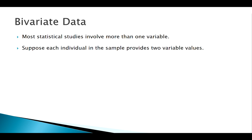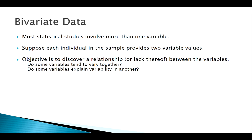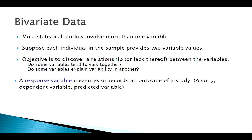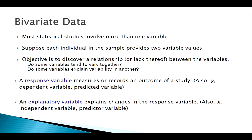We have measurements of a single individual from two different variables, and the questions we want to answer are: is there some sort of relationship here — what we'd call an association? If I change one, does the other change? Does one maybe explain the other? The variable we call Y is our response, and X is our explanatory variable.